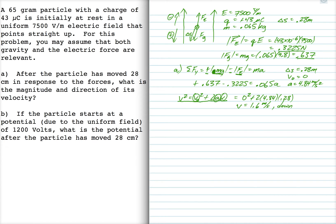It's really plus or minus 1.6 because we take the square root. But I've already decided that it's moving down, so that's the correct magnitude and direction for the velocity.